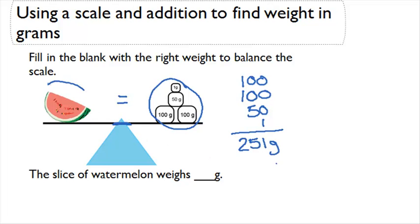Since the watermelon on this side is balanced on the scale with the 251 grams, we know that the slice of watermelon weighs 251 grams.